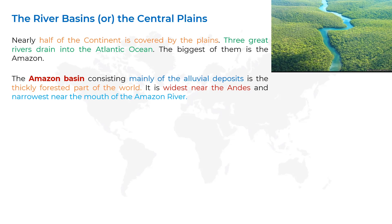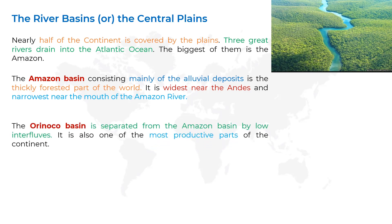The next point is: the Orinoco Basin is separated from the Amazon Basin by low interfluves. It is also one of the most productive parts of the continent. An interfluve is a region between the valleys of watercourses.